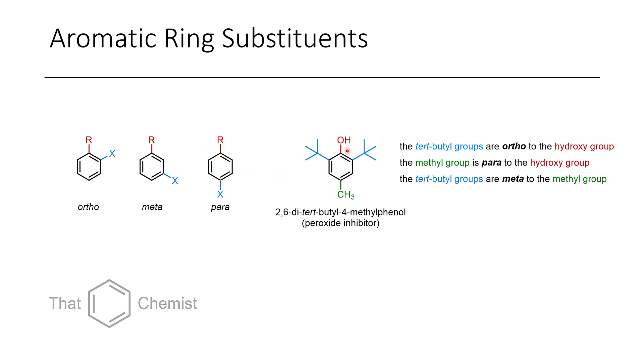In this case, we have 2,6-ditertbutyl-4-methylphenol. Between the one and the two position, this is ortho. The one and the sixth position is also ortho, because it's equidistant, relative to the phenol. So the phenol and the tertbutyl are ortho.